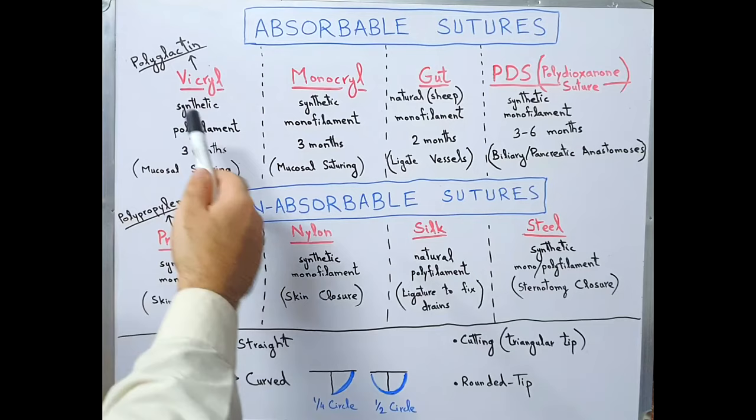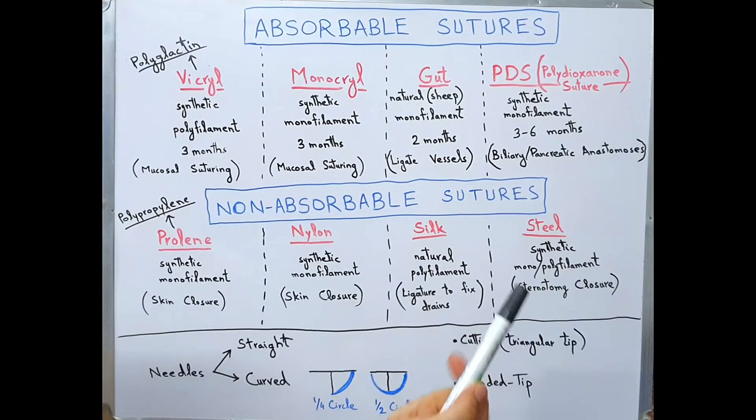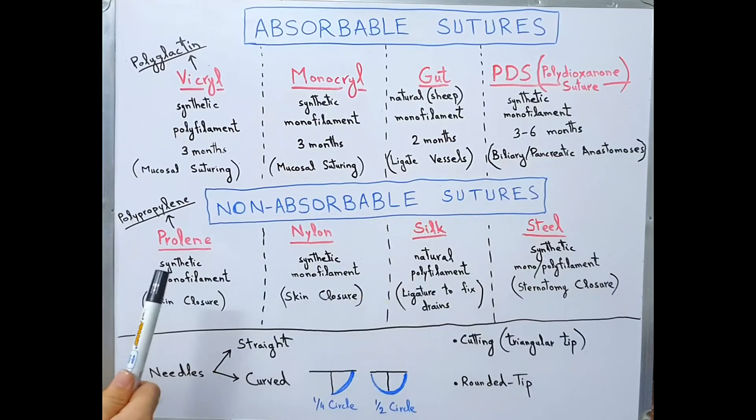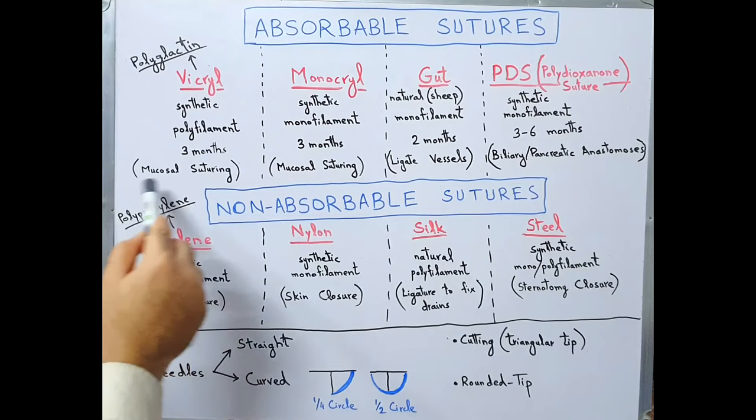Here we have the four most commonly used absorbable sutures — Vicryl, Monocryl, gut, and PDS — and four most commonly used non-absorbable sutures — Prolene, nylon, silk, and steel. Vicryl is also called polyglactin. It is a synthetic polyfilament and it lasts for about 3 months in the body. It is used for mucosal suturing.